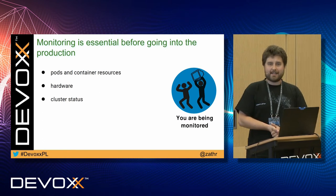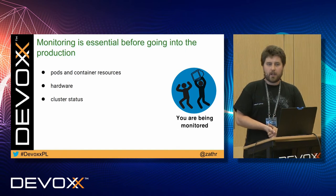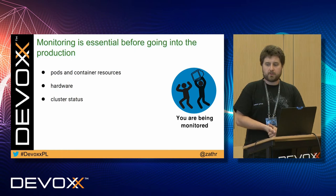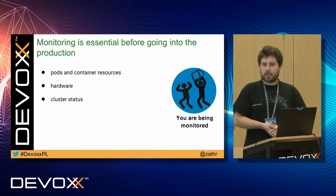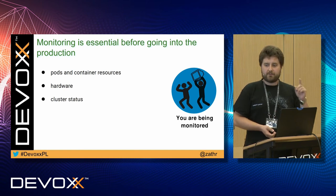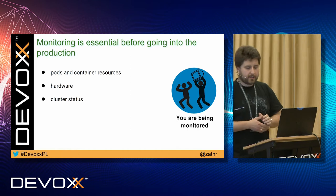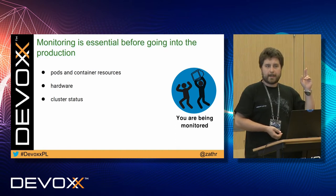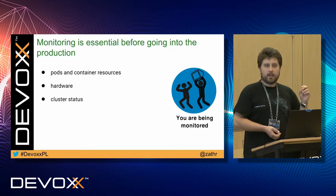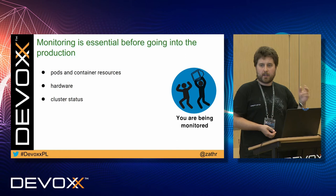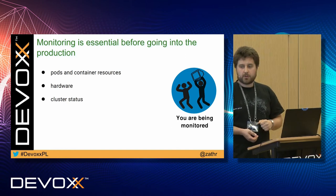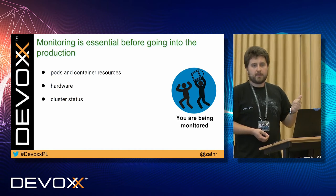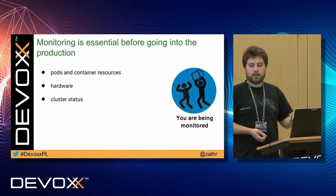Monitoring is essential before you go to production. You should choose a solution that allows you to monitor your pods and containers' resources like CPU, RAM, and network — that's the bare minimum. We have been using Prometheus. We tried Telegraph and InfluxDB but failed to obtain those items from pods and containers. You should also monitor your hardware. Don't be fooled if you run your workloads in the cloud — a virtual machine can drop out and you won't even know it. You should also monitor your cluster status, checking whether your cluster is healthy and balanced.